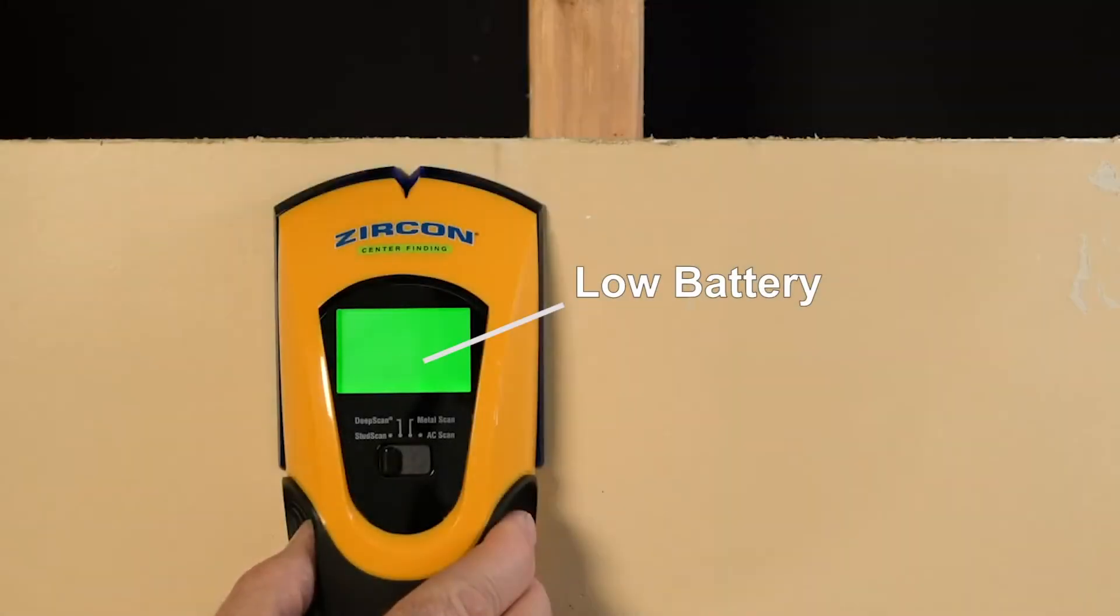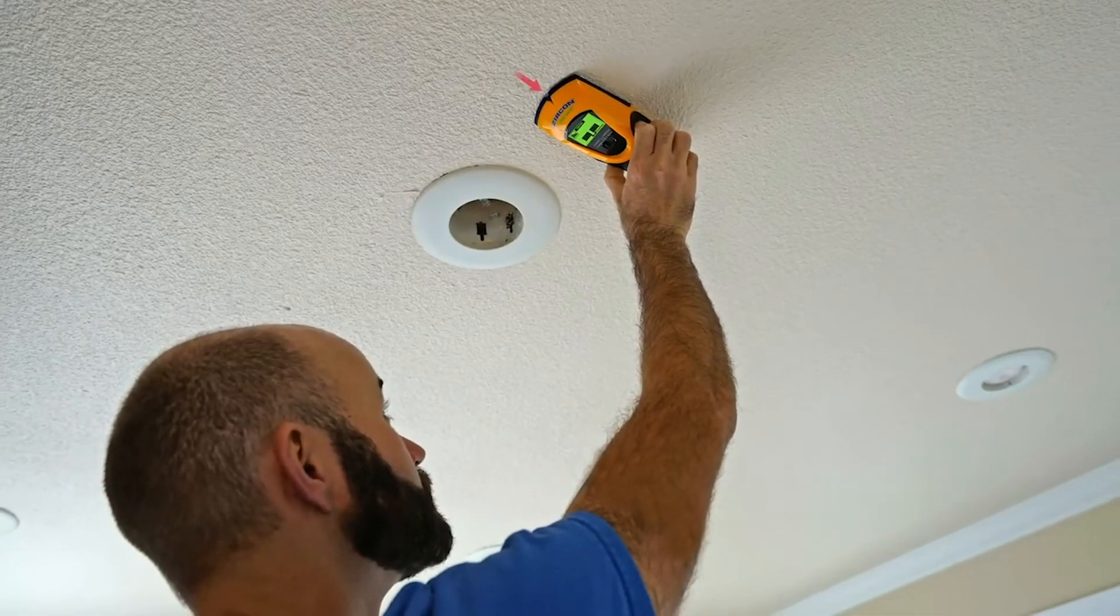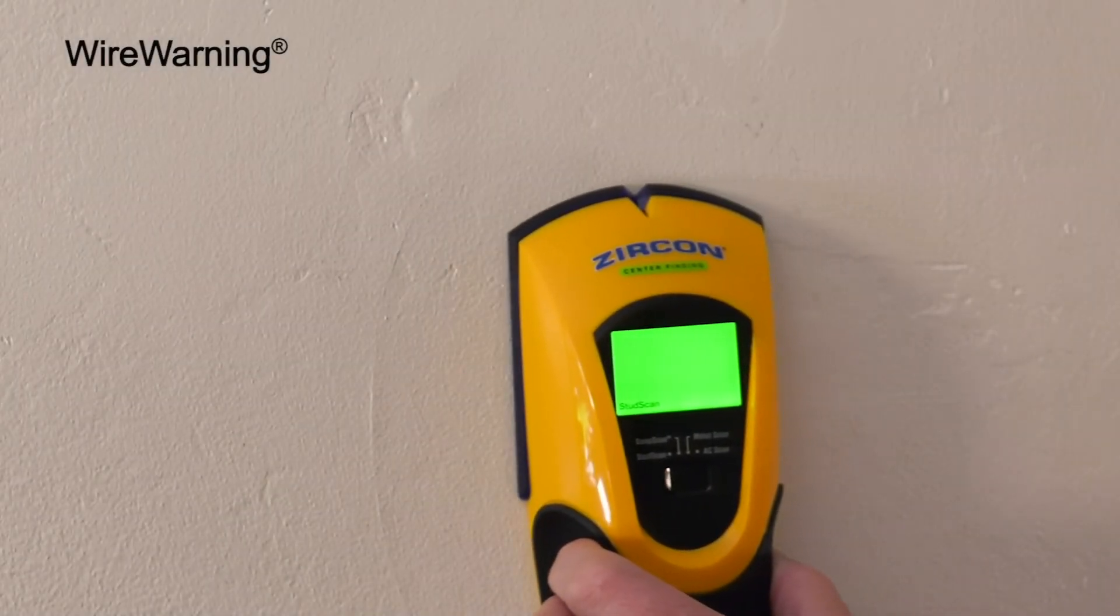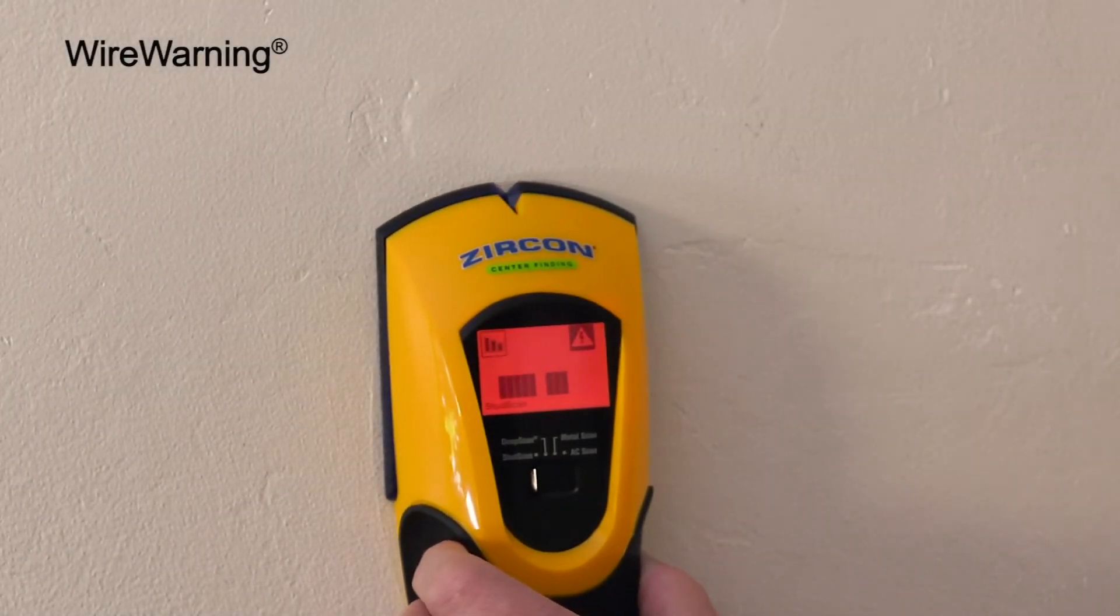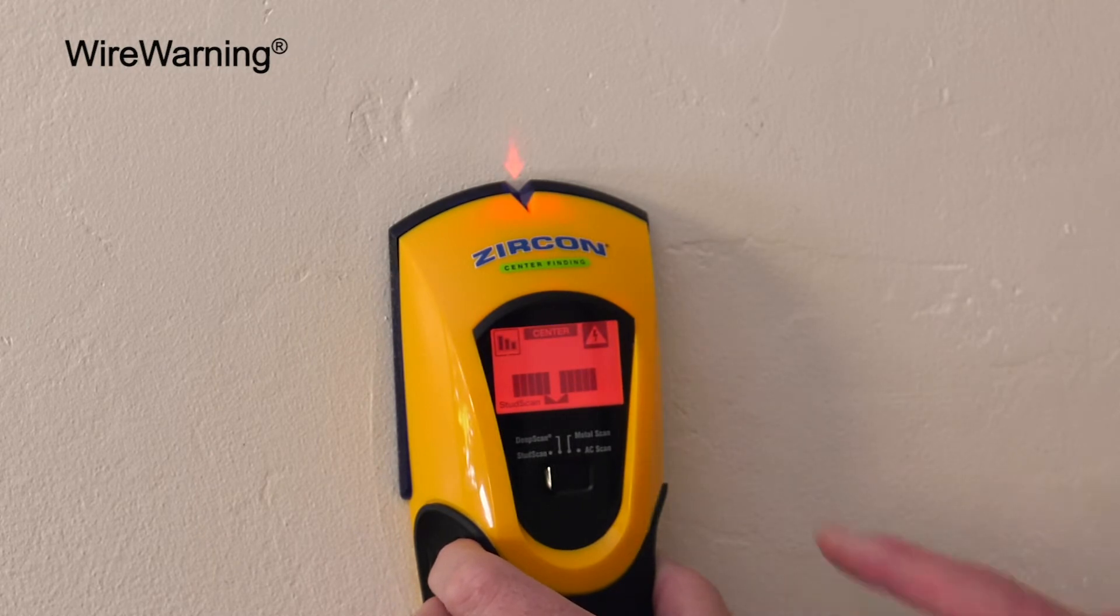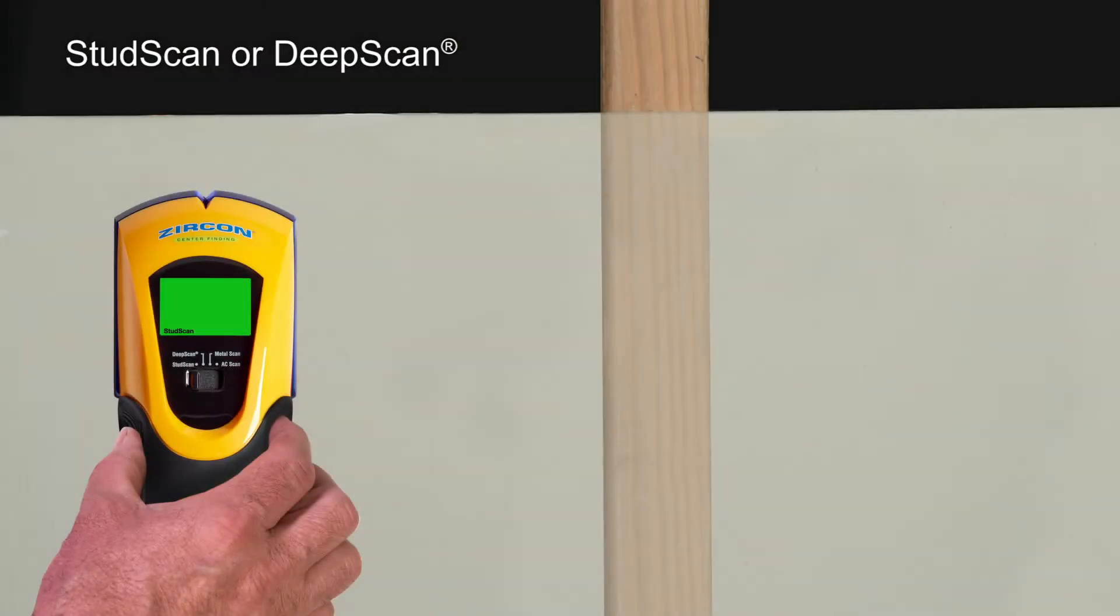A low battery indicator. It also features a backlit display for hard-to-see places and wire warning detection to alert you to the presence of live AC in stud and metal scan modes.